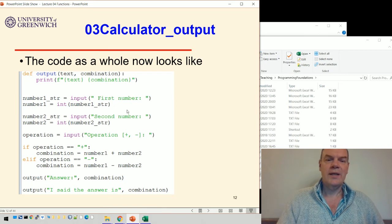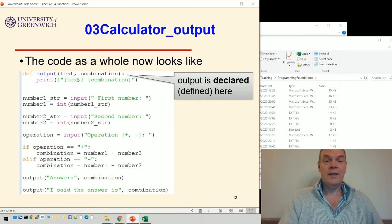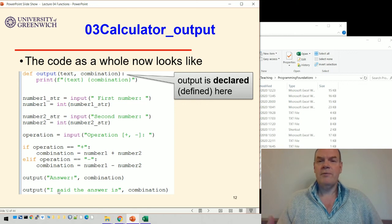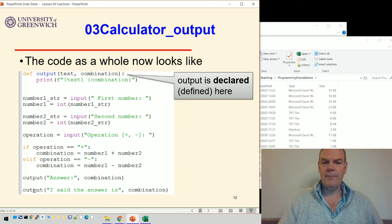The new code as a whole now looks like this. Notice we've got the output function declared at the top of the code. This bit hasn't changed, the input of the first and second numbers. This hasn't changed, the calculations of adding or subtracting. The difference is down the bottom here. We can use output to say answer and then whatever the combination is, or we can say something else. We can use this output function over and over again many times with different text.